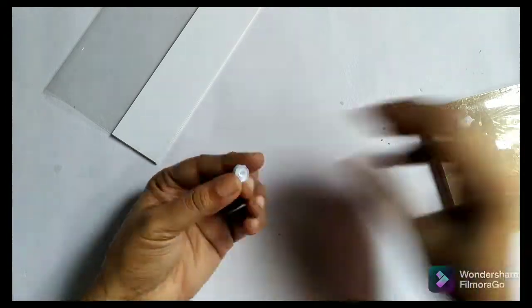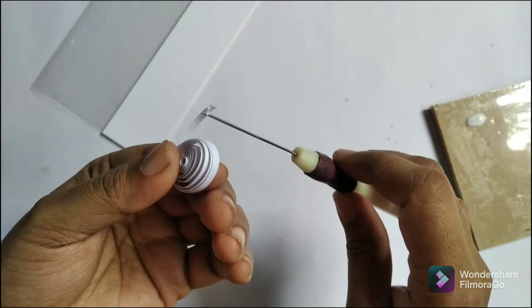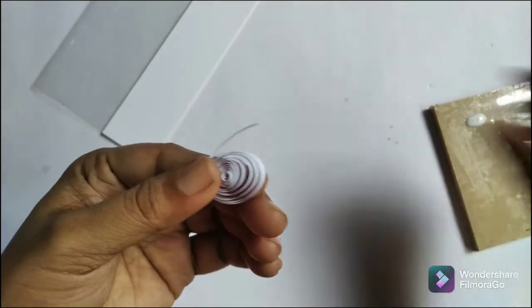Make a loose coil and then press them as shown in the video to make leaf-like elements.